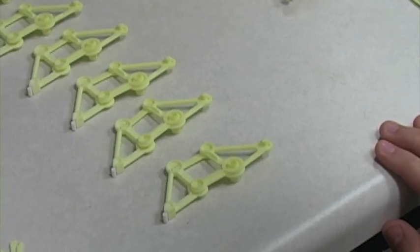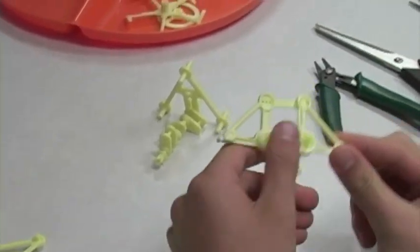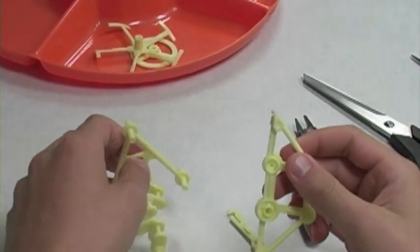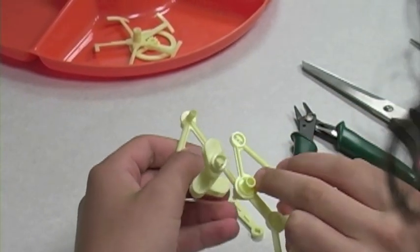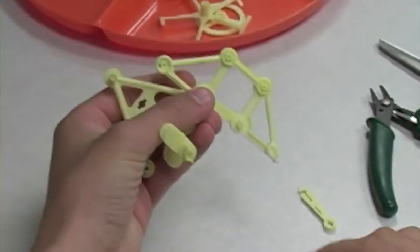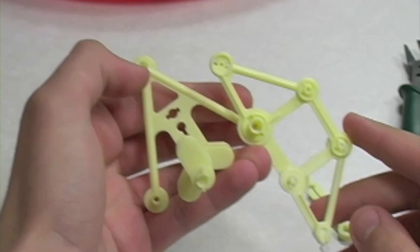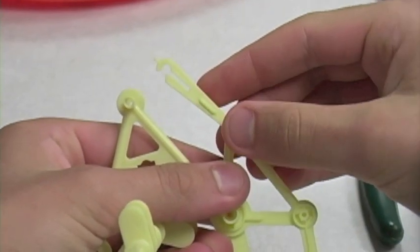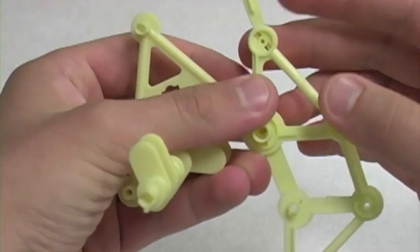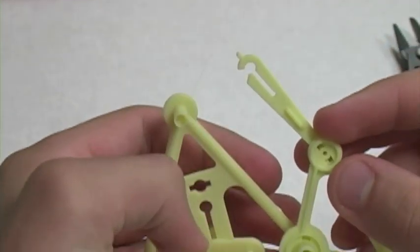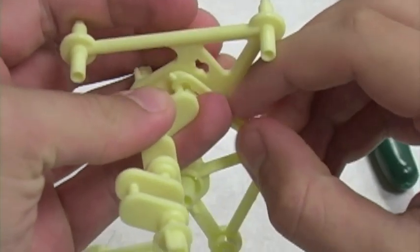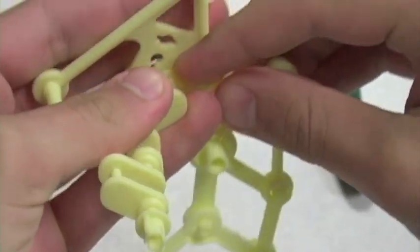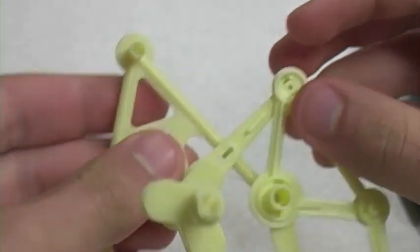For step two of section two you're going to take one of your legs and attach it to the frame via the largest joint so that it looks like this. Next you're going to take part E, attach it to the leg, and snap it onto the crankshaft thusly.